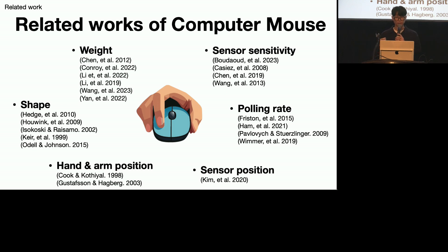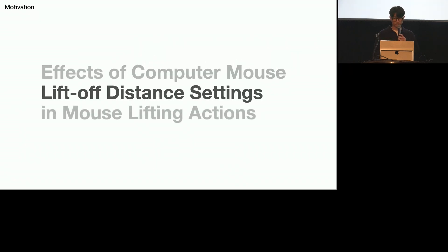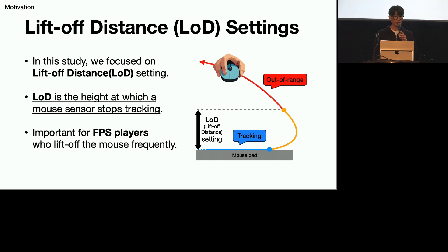Also, the hand and arm position can affect the performance. In this study, we will focus on an unexplored gaming mouse parameter known as the lift-off distance setting. Lift-off distance, or LOD for short, is the height at which a mouse sensor stops tracking when lifted off the surface.